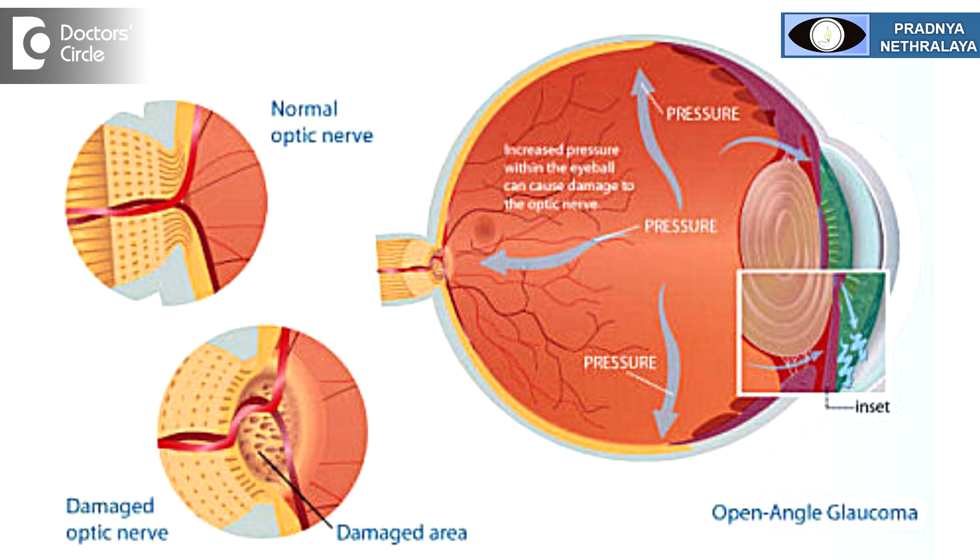The most common cause of squint or strabismus is congenital — that is, children are born with squint. Other causes may be high refractive errors or high power in the eye, which may be in one eye or in both the eyes. Other common causes of squint occurring in later age may be loss of vision in one eye due to various causes, such as an injury, damage to the optic nerve, or after a brief illness like measles or chicken pox, a child can develop squint.